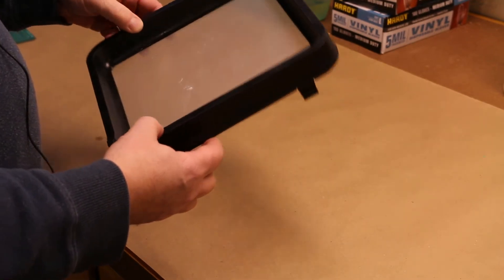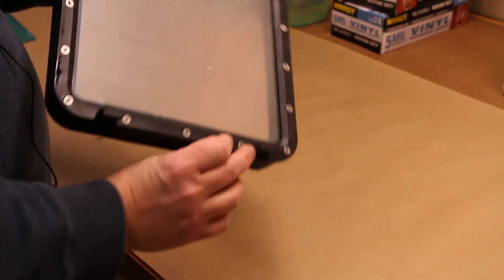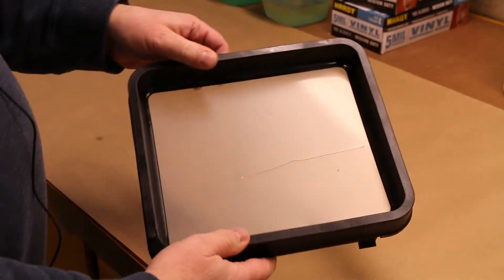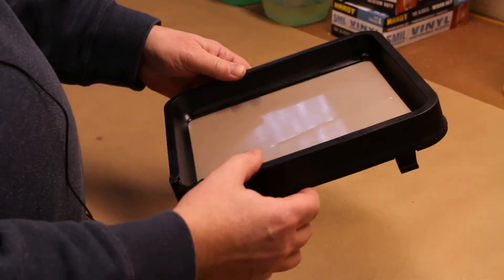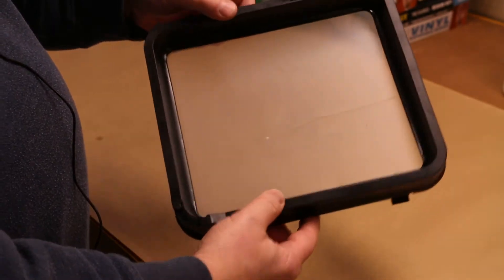You could order a new resin tank from the manufacturer. That would take a long time and cost a lot of money. So instead, I'm going to try and replace the film in the bottom of the vat.